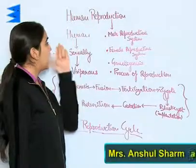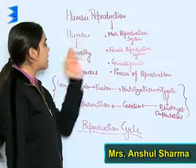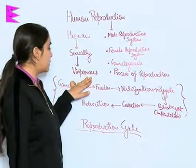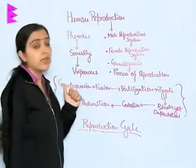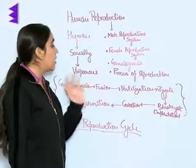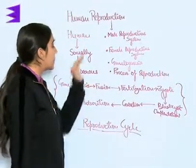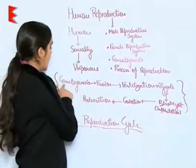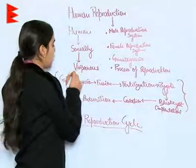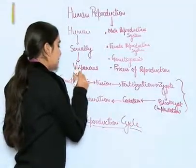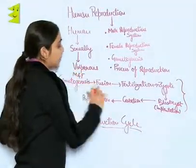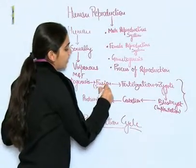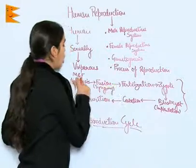Human beings are sexually reproducing viviparous organisms. Viviparous means instead of laying eggs, they deliver a fully grown individual. The process of reproduction in human beings begins with gametogenesis, that is the formation of male and female gametes, followed by their fusion.